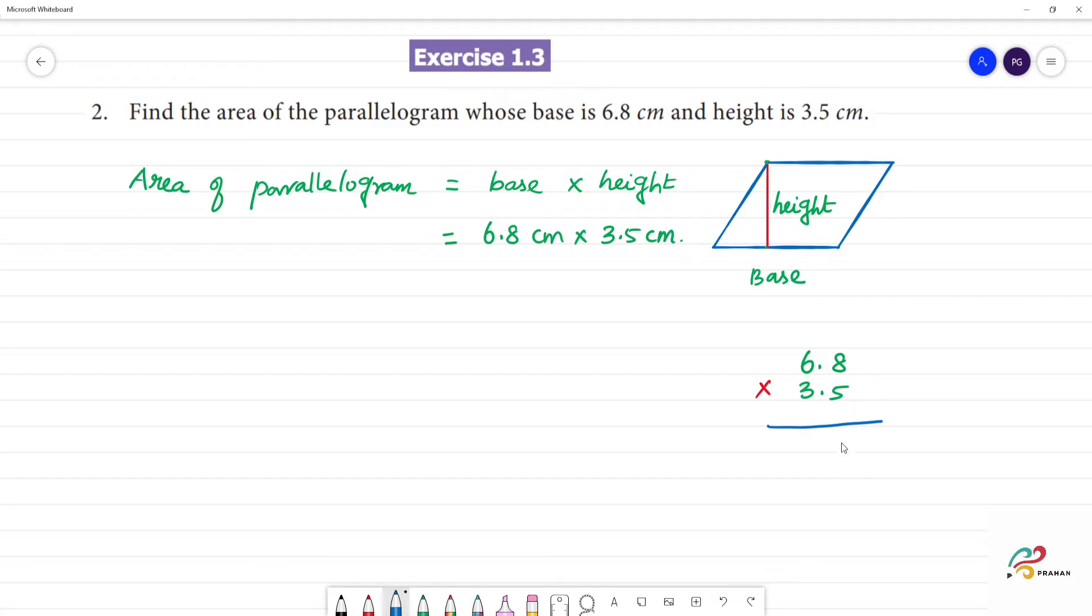8 fives are 40, remainder 4. 6 fives are 30, 30 plus 4 is 34. Next, 8 threes are 24, remainder 2. 6 threes are 18, 18 plus 2 is 20.